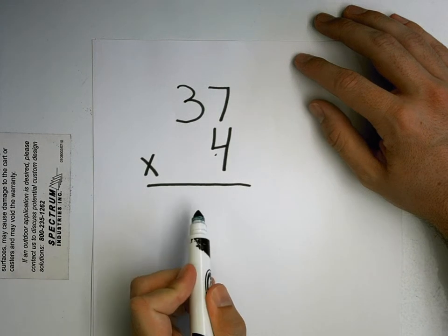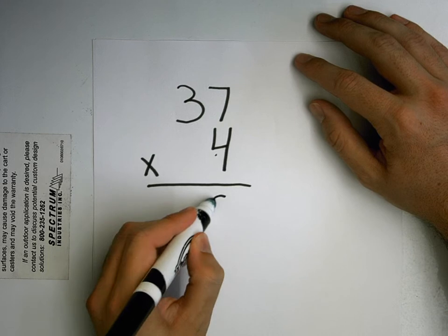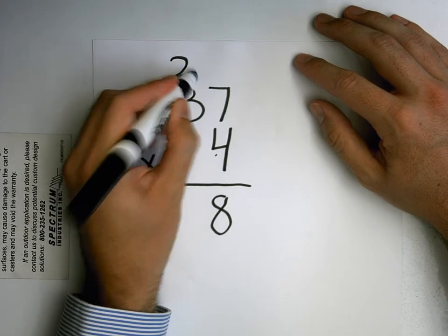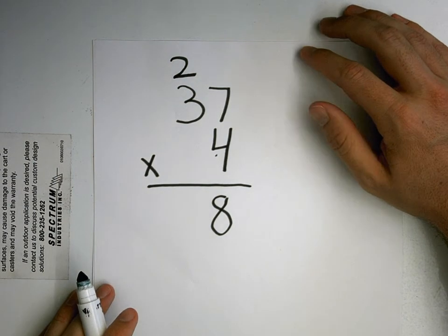But I can't just put twenty-eight down here. I put my eight from twenty-eight that's in the ones place down here and then I put my two up here. Kind of like carrying in addition.